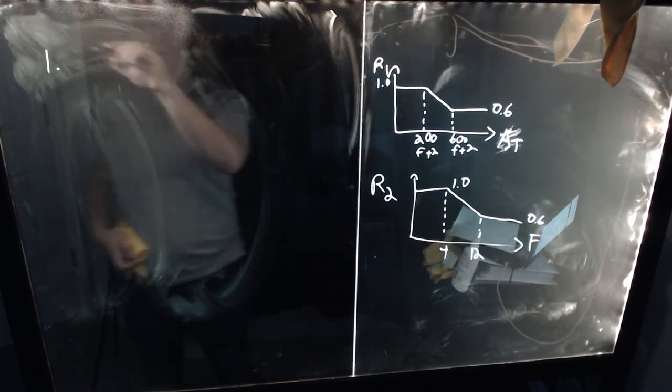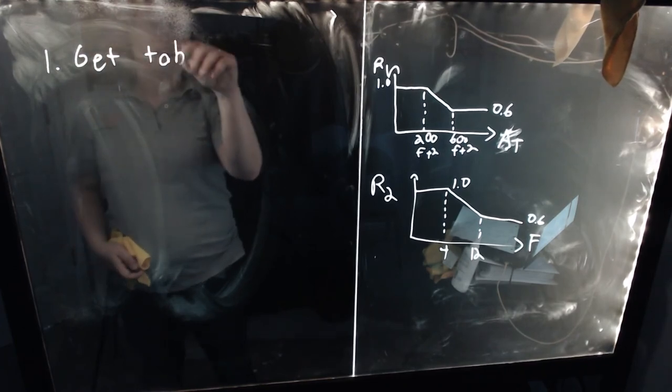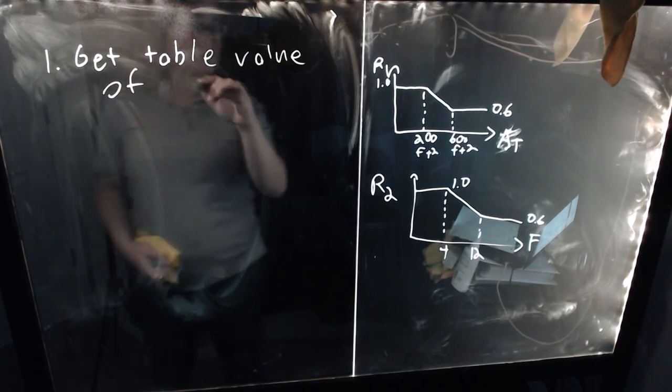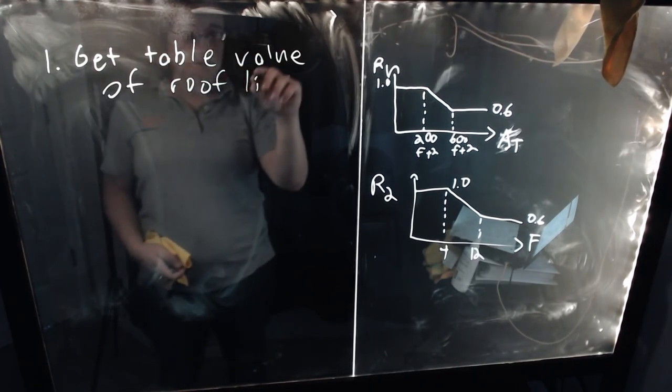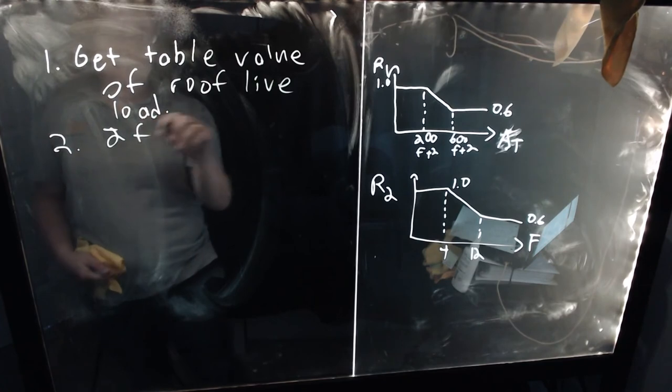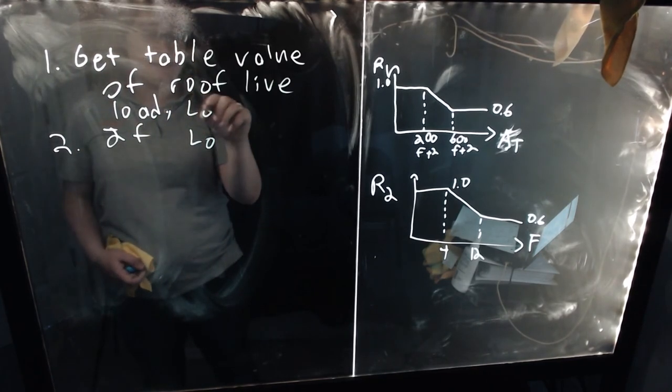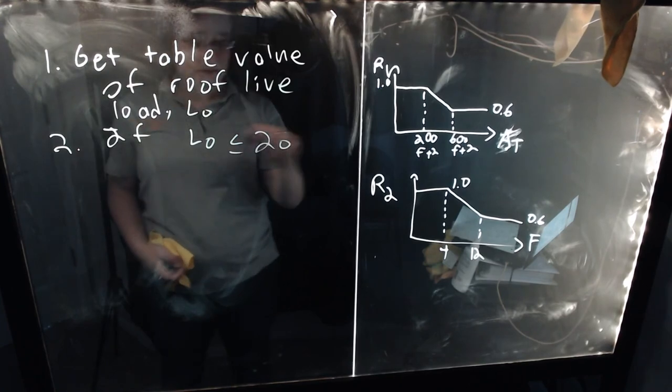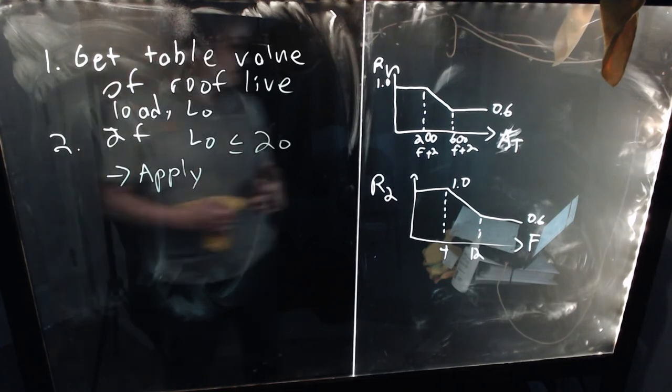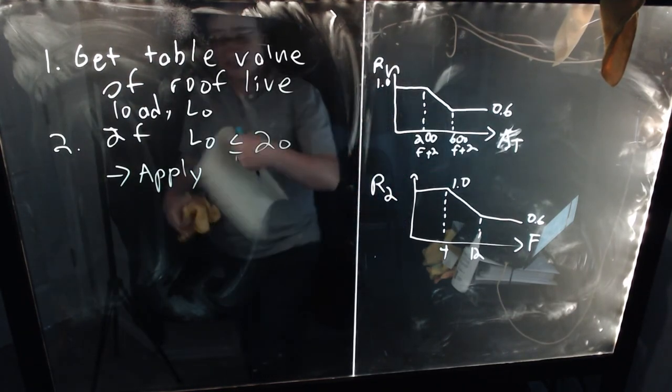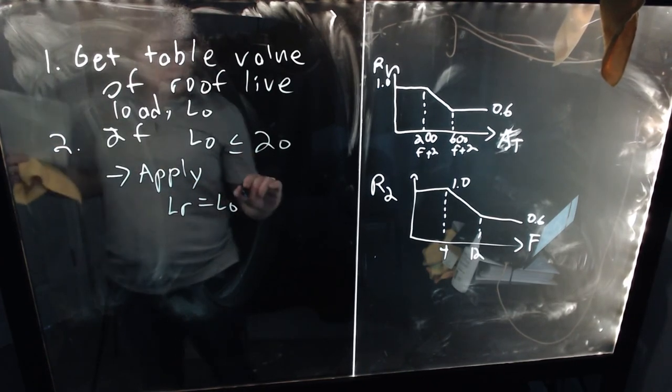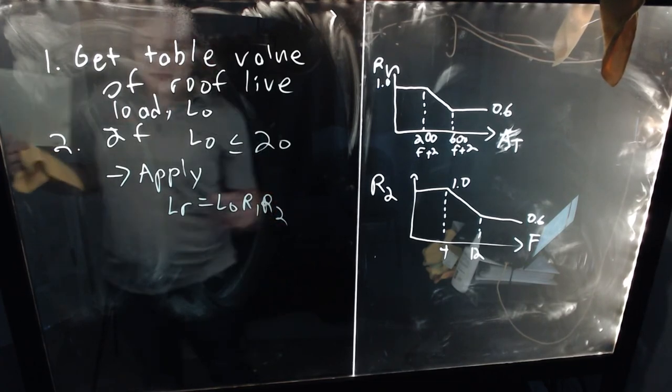So, your first step is going to be to get table value of the roof live load. If the unreduced value, this is L0 here, if L0 is less than or equal to 20, apply that equation we saw earlier, which is LR is equal to L0 times R1, R2.